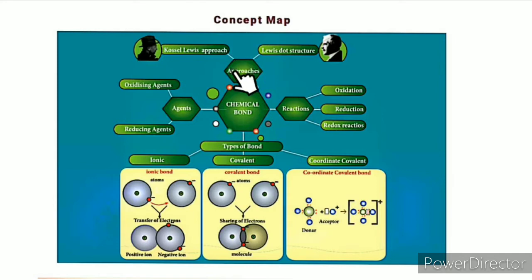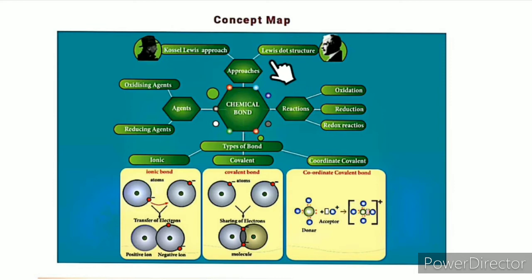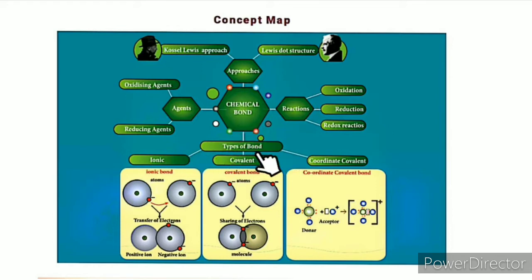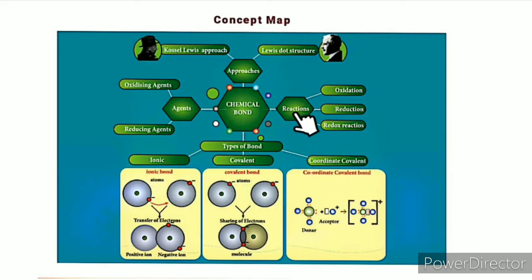This lesson covers four topics. First topic: Lewis's Approach to Chemical Bond. Second topic: Lewis Dot Structure Approach to Chemical Bond. Third topic: the types of bonds — strong bonds and weak bonds. The fourth topic is reactions, which will be covered in the next video.